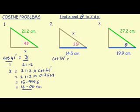Cosine 35 degrees equals adjacent over hypotenuse, 14.5 divided by x. Put 1 under the cosine 35 and cross multiply as before.